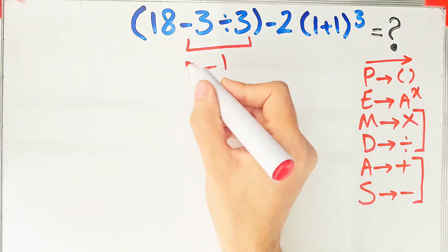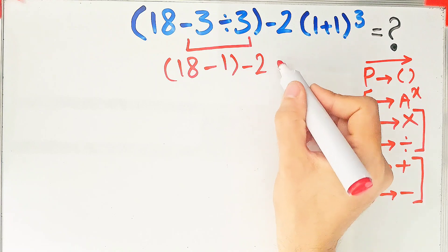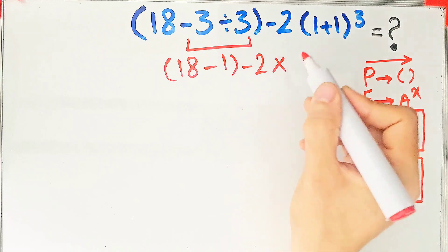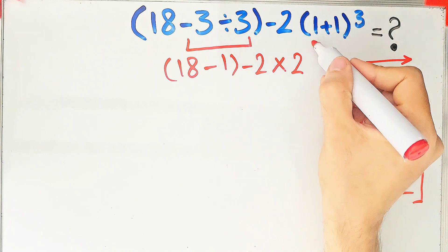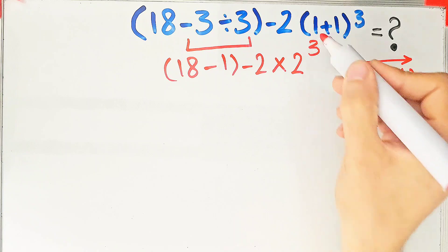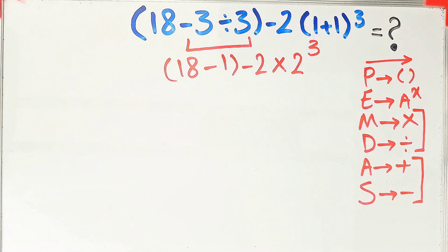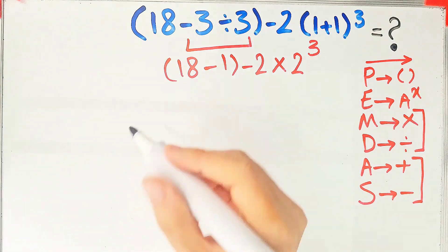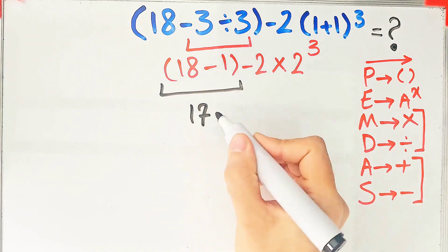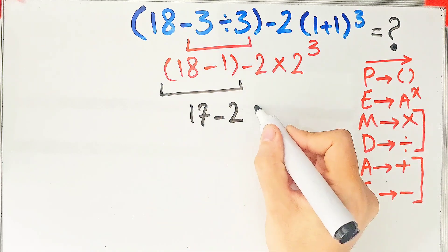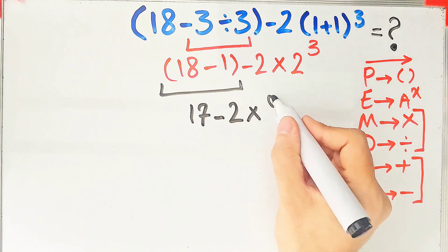Now we have 18 minus 1 in the first parenthesis, then minus 2 times (1 plus 1), which equals 2, then to the power of 3. Again we simplify the parenthesis: 18 minus 1 equals 17. Now we have 17 minus 2, then times 2 to the power of 3, which equals 8.